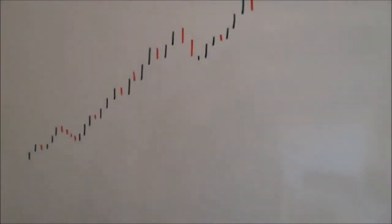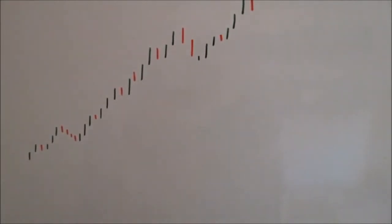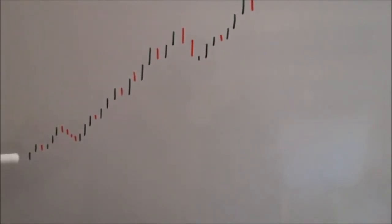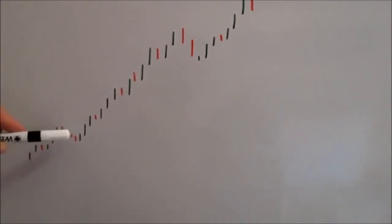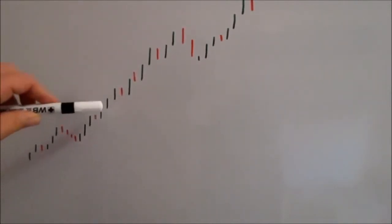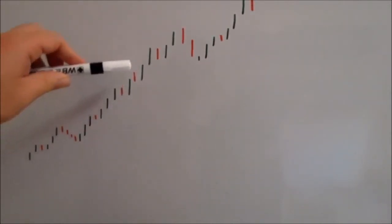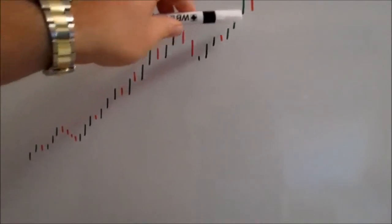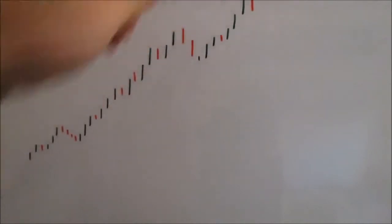Let's look at the two-day rule in an established up trend. This would be a typical representation of a stock market chart that is trending higher. You're having pullbacks, which is normal. The pullbacks are getting bought and the market is continuing its upside.